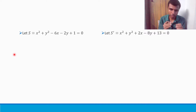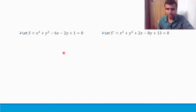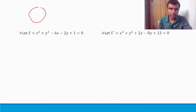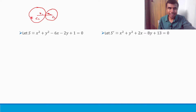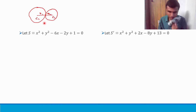Let me explain a little concept. They're asking us to show that the circles touch each other. When will two circles touch each other? The circles will touch each other externally when the distance C1C2 — the distance between the two centers — is equal to R1 plus R2, the sum of the radii. Internally they can also touch, but let's see which case applies here.